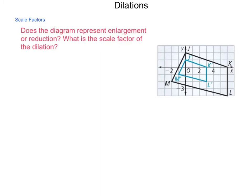We have a pre-image of J, K, L, M. That is a quadrilateral. And the image of J'K'L' and M' also on the same grid. The question is, does the diagram represent enlargement or reduction? And what is the scale factor of this dilation? As we go from our pre-image, drawn in black, to our image, drawn in blue, did the size get larger or smaller? Since our image is inside, we can safely say that this is a reduction.